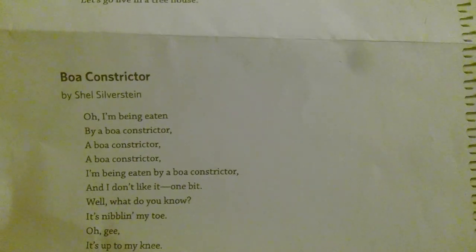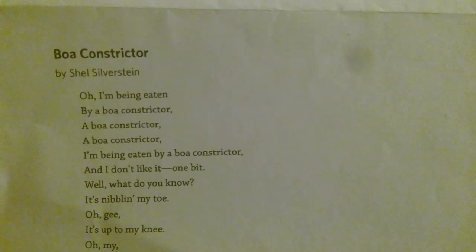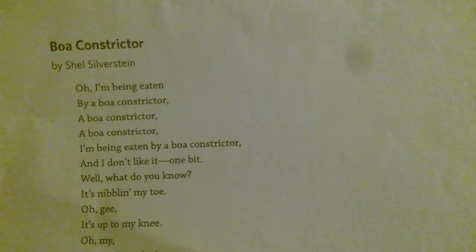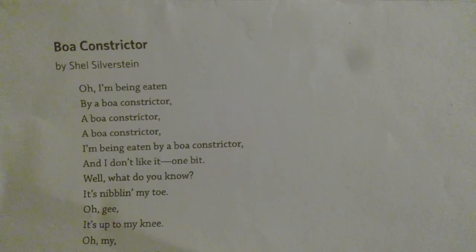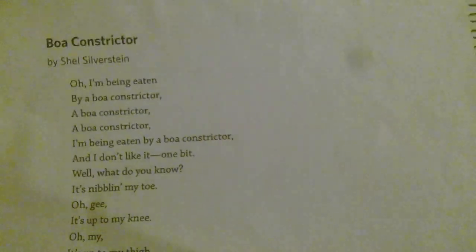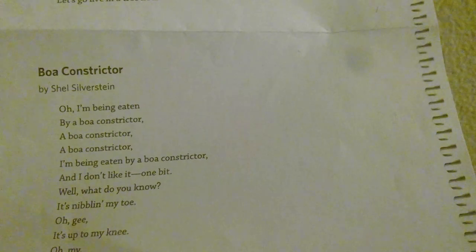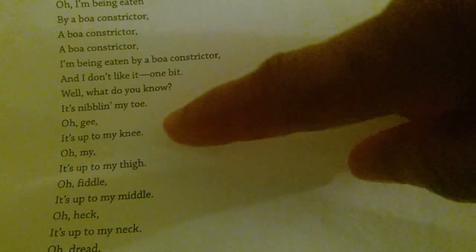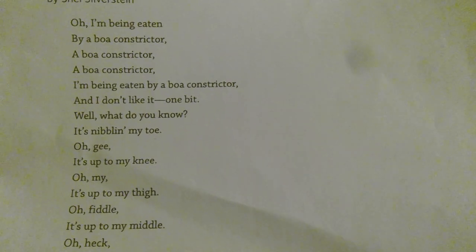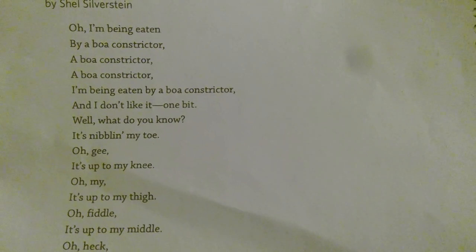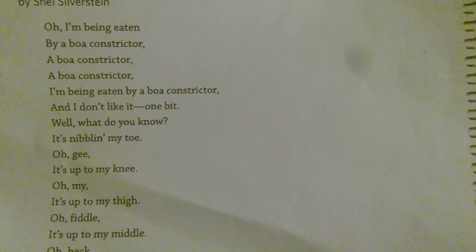Do you think that this poem is funny? There are some parts that are funny. Sometimes poets use humor — something to make you laugh or smile. They can also use repetition, like 'a boa constrictor, a boa constrictor.' They can do that, or they can use rhyme. There are some poems that rhyme and some that don't. For example, 'oh gee, it's up to my knee' — gee and knee rhyme. And 'oh fiddle, it's up to my middle' — fiddle and middle rhyme. So poets do that.